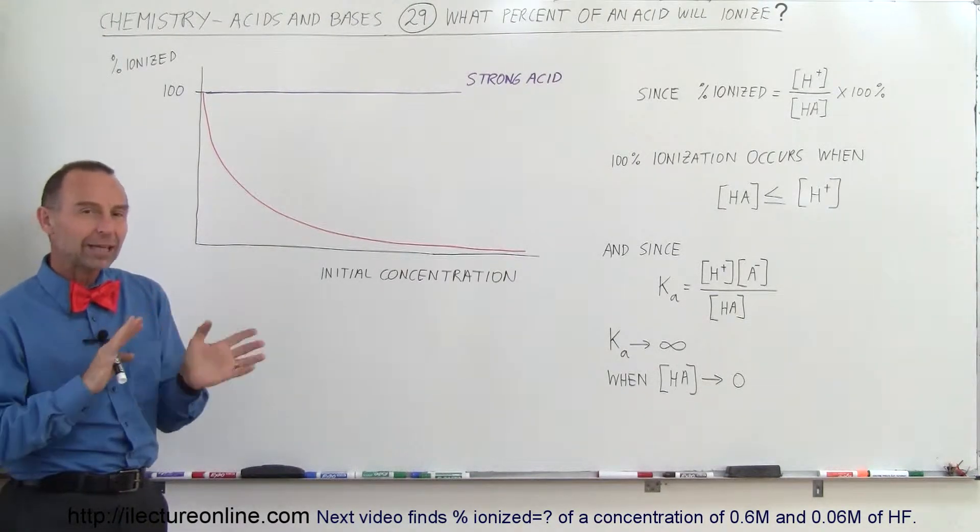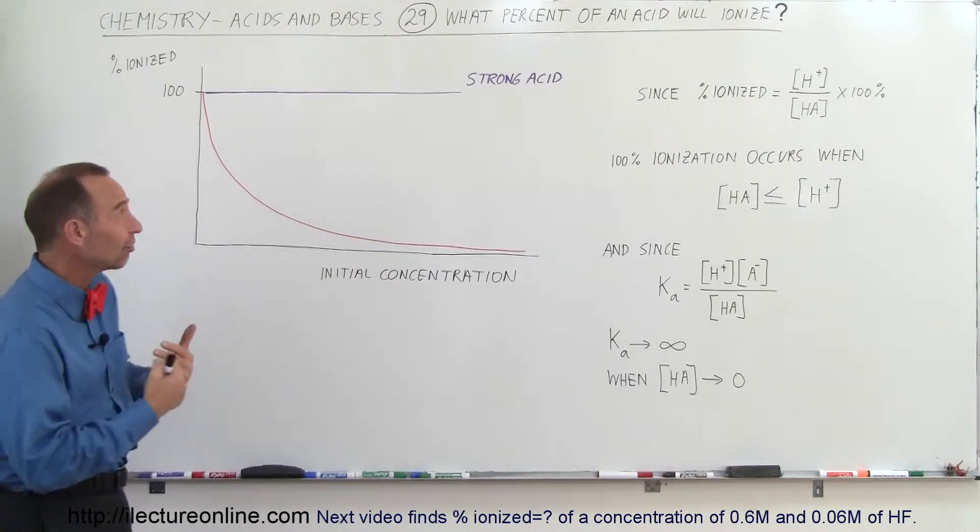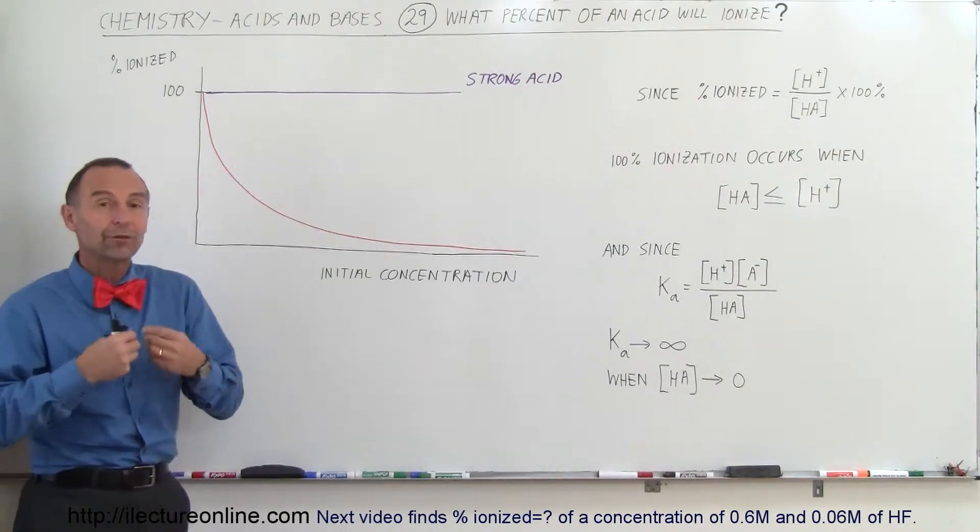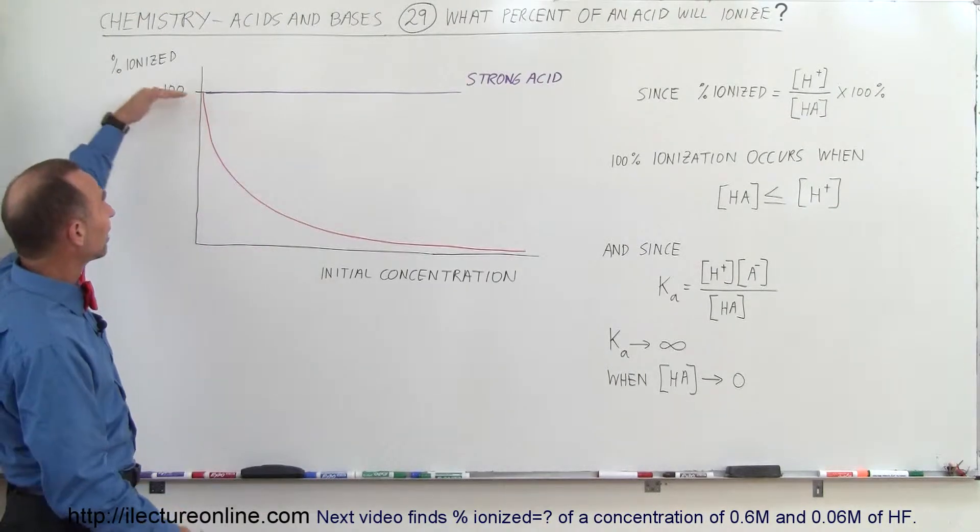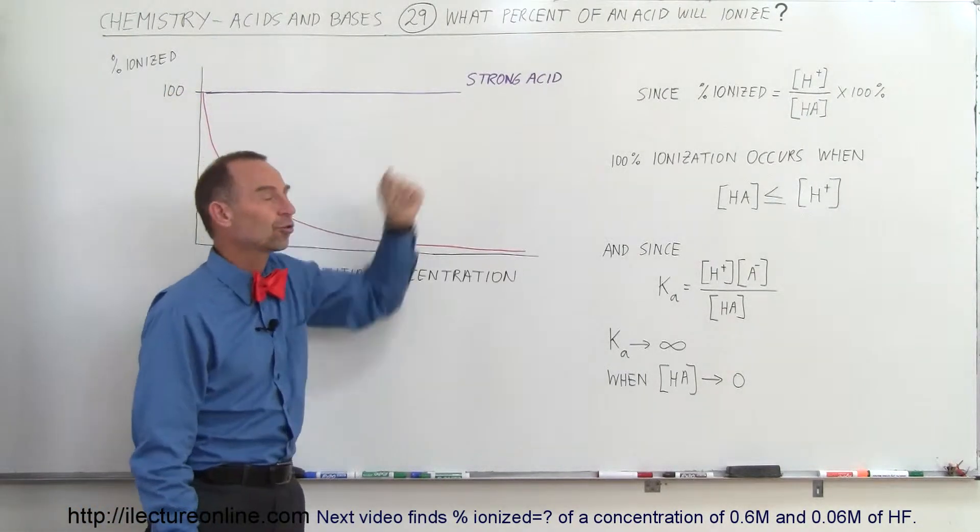And so here we have to look at it in two different ways. First of all, what if you have a strong acid? If you have a strong acid, it doesn't matter what the original concentration was of the acid, a strong acid will fully ionize, or very nearly so, and therefore we can say that the ionization percentage, percent ionized, will be 100% for a strong acid.